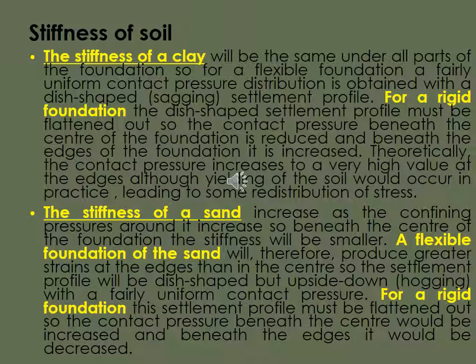The stiffness of sand increases as the confining pressure around it increases. So beneath the center of the foundation, the stiffness will be smaller. A flexible foundation of sand will therefore produce greater strains at the edges than in the center, so the settlement profile will be dish shaped but upside down, hogging with a fairly uniform contact pressure. For a rigid foundation, this settlement profile must be flattened out. So the contact pressure beneath the center would be increased and beneath the edges it would be decreased.